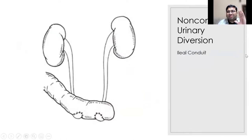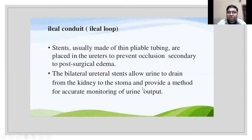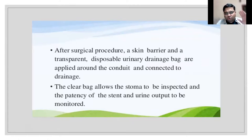For the ileal conduit, you use a 10 to 50 centimeter loop of ileum, 50 centimeters proximal to the ileocecal junction. Stents are placed because there is a higher chance of obstruction at the level of the uretero-intestinal anastomosis, and they help monitor urine output postoperatively. After the surgical procedure, a skin barrier and bag are placed, and a stomal therapist works in tandem with the surgical team.